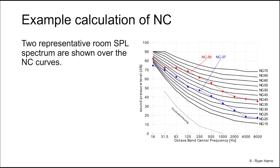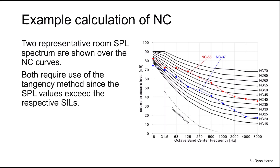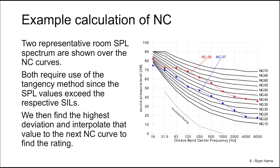Two representative room SPL spectra are shown in the NC curve plot here. One curve is shown in red and the other is shown in blue, along with our NC curves. Both require the use of the tangency method since their SPL values exceed the respective SILs. We then compute the highest deviation for each curve. For instance, the curve of data in red exceeds the NC 55 curve, and it exceeds it most right here. We then interpolate from NC curve 55 to NC 60, and we determine that this is going to be rated as NC 56, since it exceeds it by about one decibel over the 55 rating.